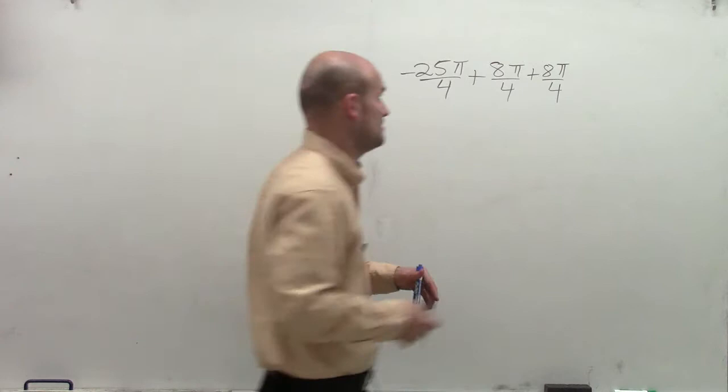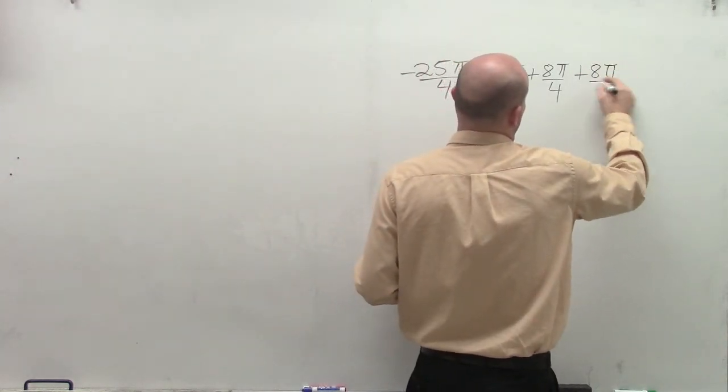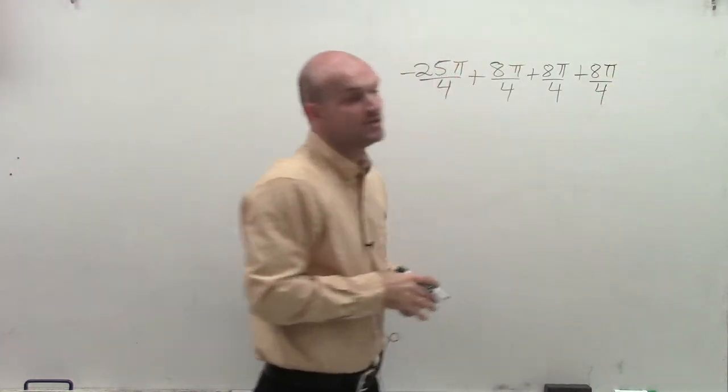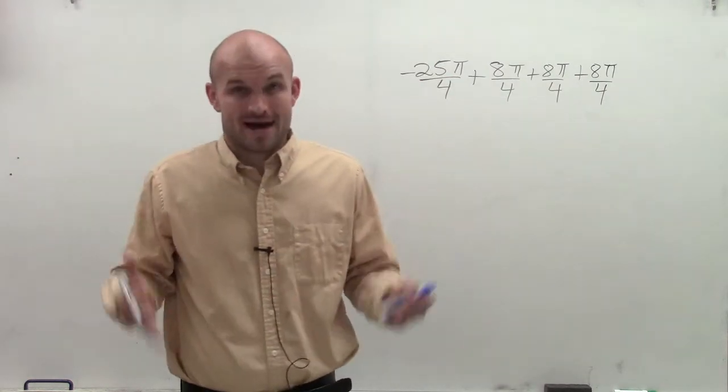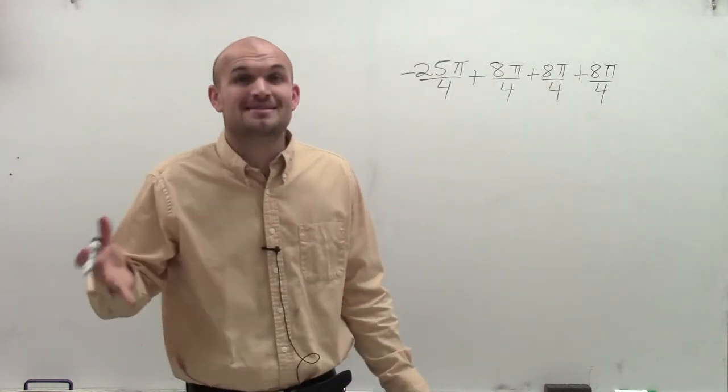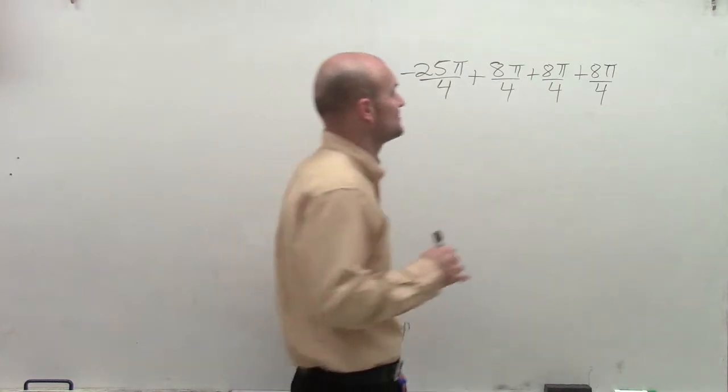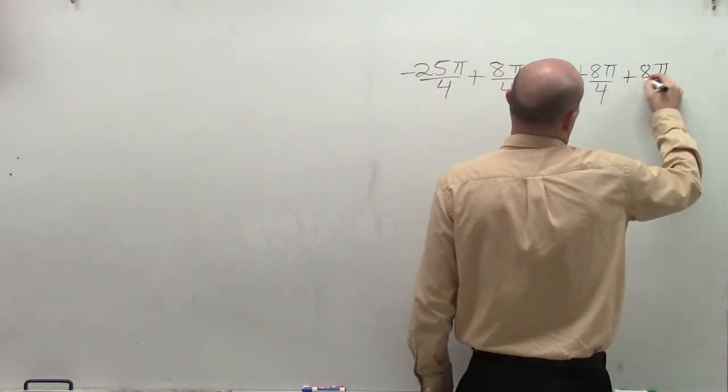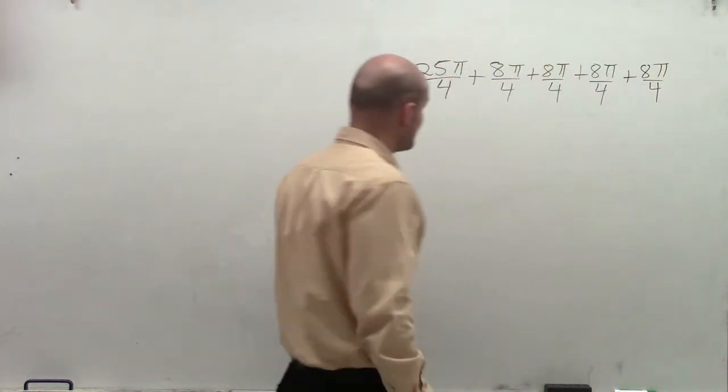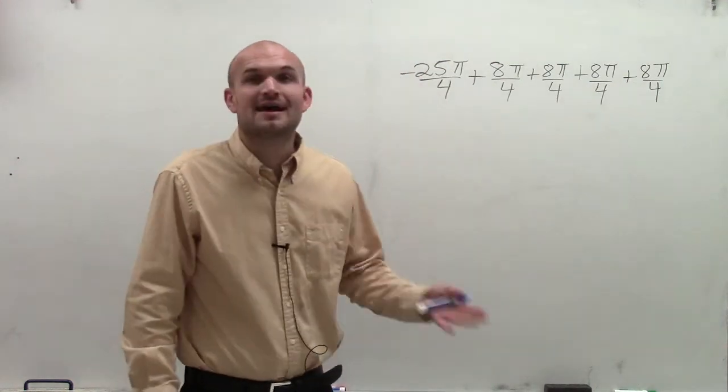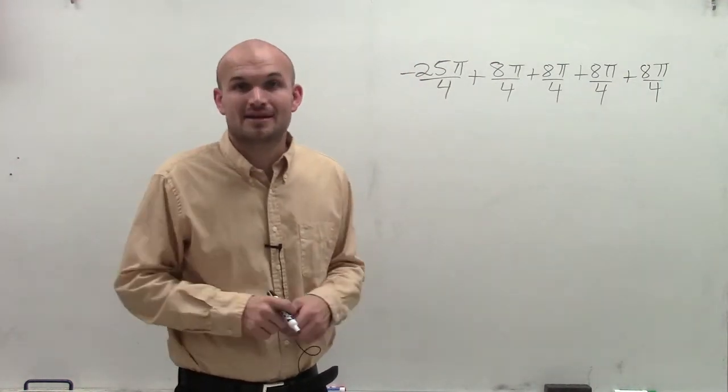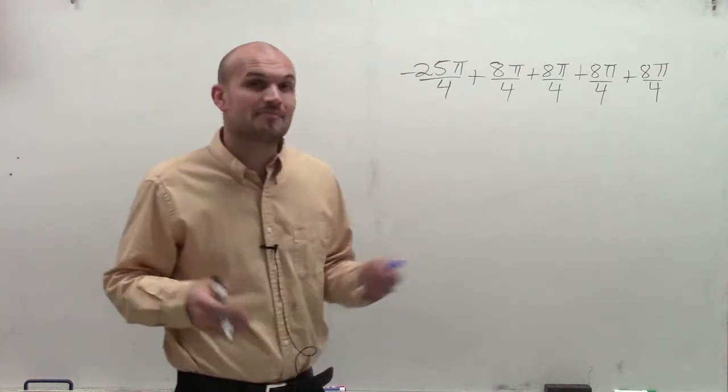So I add 8 pi over 4 again, which gives me negative 1 pi over 4, which is almost positive but not there. Therefore, I'm going to add 8 pi over 4 again, and now I finally have a positive angle, which is 7 pi over 4.